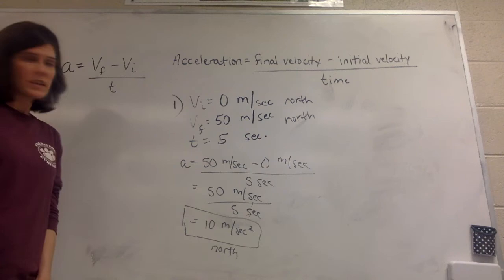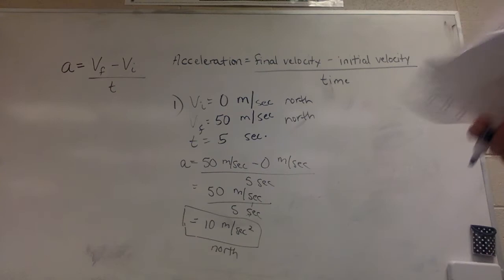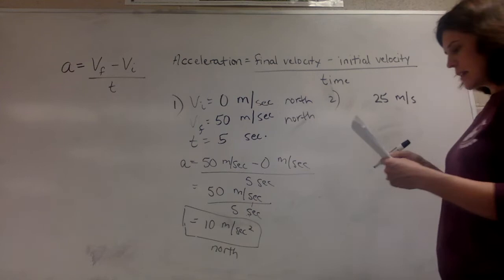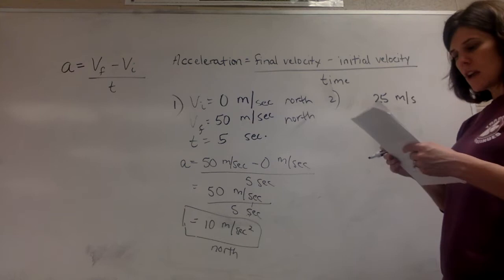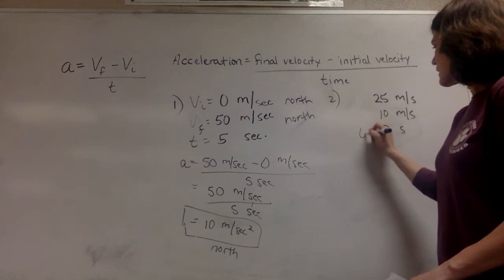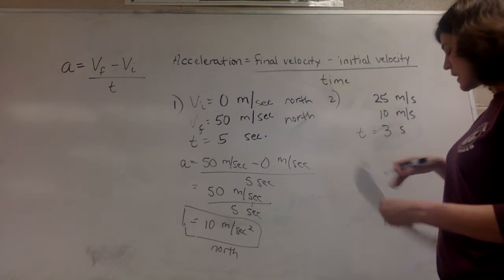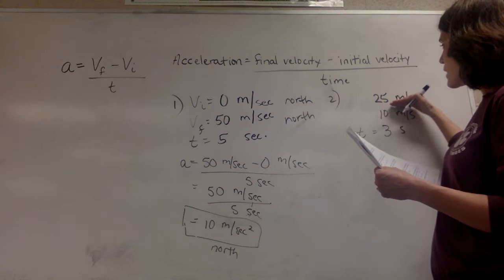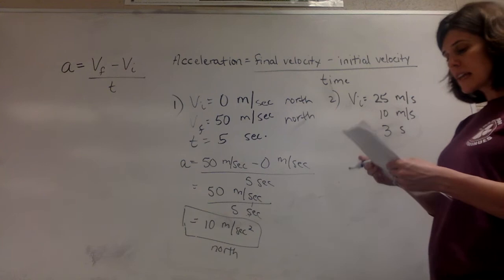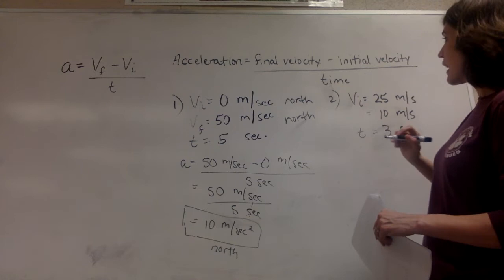Let's do one other example. This one we're looking at a roller coaster. A roller coaster is moving at 25 meters per second at the bottom of the hill. Three seconds later, it reaches the top of the hill moving at 10 meters per second. What is the acceleration of the roller coaster? The time is easy — seconds is a unit of time, so it took three seconds. Read the question carefully: it says it is moving at 25 meters per second — that's the starting or initial velocity, VI. It starts up a hill, and at the top of the hill it's only moving 10 meters per second — that is the final velocity.